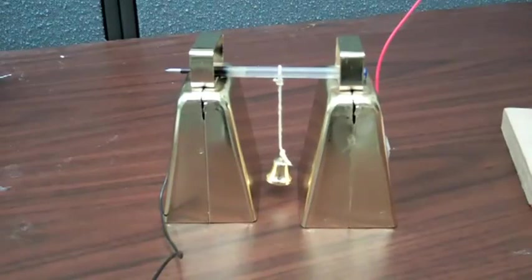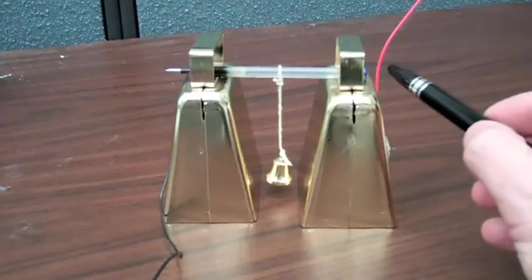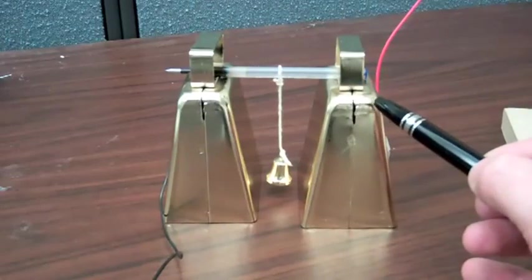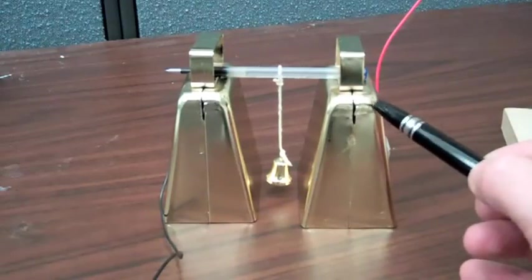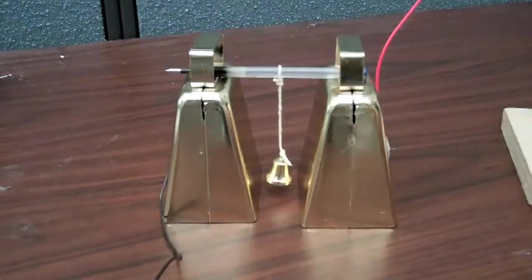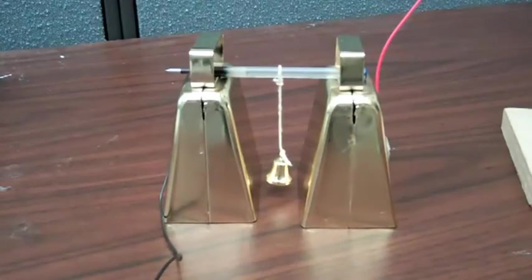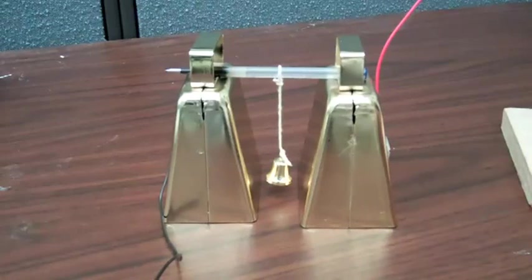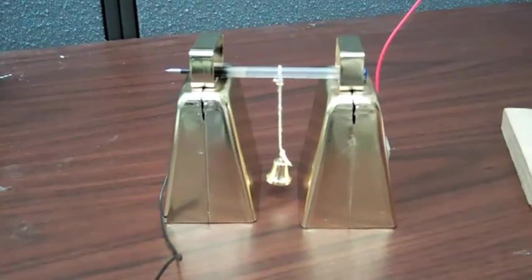I have connected the right cowbell to the Van de Graaff generator so it will charge up to 10,000 volts and the left cowbell is grounded. I will now start the Van de Graaff generator and you will hear the little electric motor in it turning.